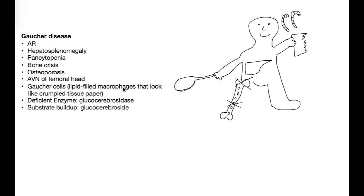For Gaucher's cells — if you look at your text you can see these cells filled with lipids that look like crumpled tissue paper — in my character's left hand I have a ripped, crumpled sheet of paper to help remember Gaucher's macrophages. For the deficient enzyme and substrate buildup, we've got glucocerebrosidase — not galactocerebrosidase, but glucocerebrosidase. I drew two candy canes beside the cerebrum, because candy canes are made of sugar and 'gluco' means sugar. So: gluco from the candy canes, cerebro beside the cerebrum, giving us glucocerebrosidase.